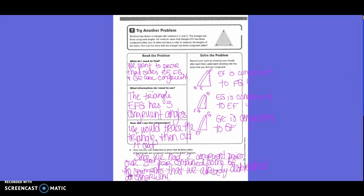Solve the problem. Record your work by drawing your model. After each fold, draw in the sides that you find are congruent. So we drew our triangle, and then we put a little piece coming out to make it look 3D. And then we said EF is congruent to FG, and it was folded at point F. We said that EG is congruent to EF, and it was folded at E.